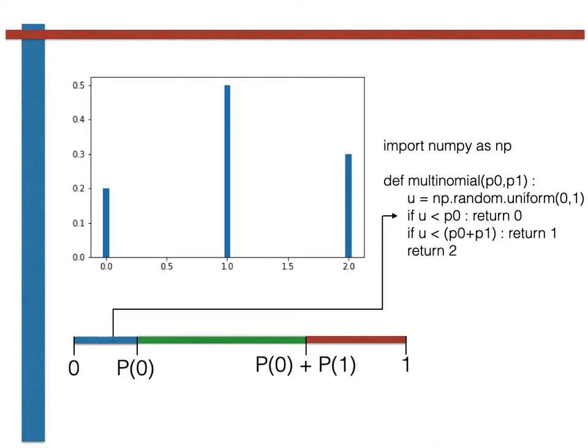The probability that the random variable falls within the green segment of the line is proportional to the length of that segment, which is proportional to the probability of getting a 1. Within our function, we can check if u is less than p0 plus p1 to check if we are in the green segment, and if we are, we return a 1 in this case.